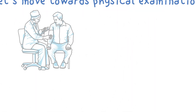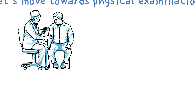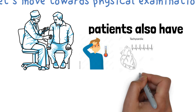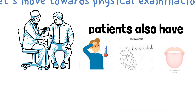Let's move towards physical examination. The patient may also have elevated temperature, tachycardia, and a white-coated tongue, which is present due to vomiting of HCl gastric content. Tenderness is present when the parietal peritoneum touches the inflamed appendix, producing tenderness.